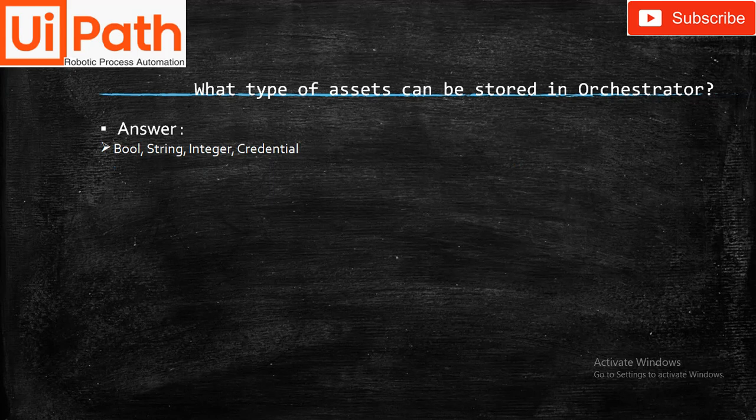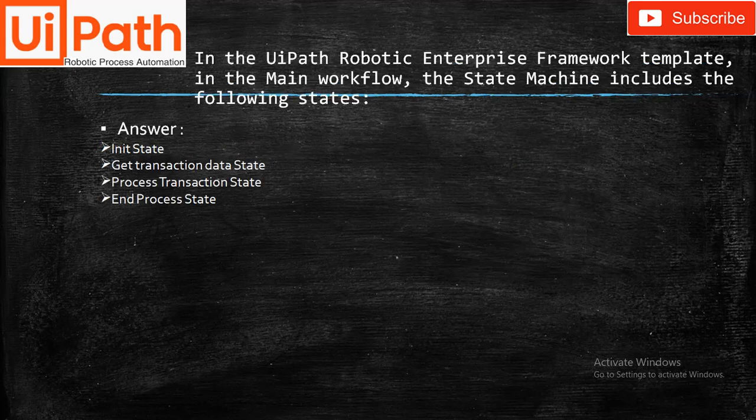What types of assets can be stored in Orchestrator? Answer: Boolean, String, and individual Credentials can be stored in Orchestrator. In the UiPath Robotic Enterprise Framework template, the main workflow state machine includes the following states: Init, Get Transaction Data, Process Transaction, and End Process.